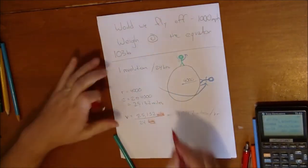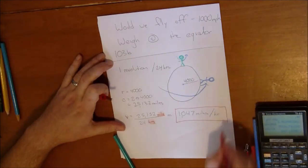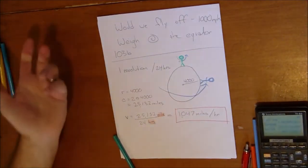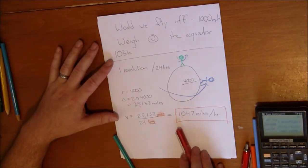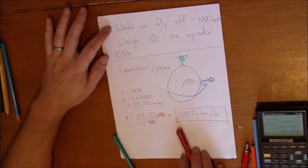I'm using pens because my previous videos do not show up well when I'm using a pencil. So yes, there's an equatorial velocity of over 1,000 miles an hour. But the question is, would we fly off?